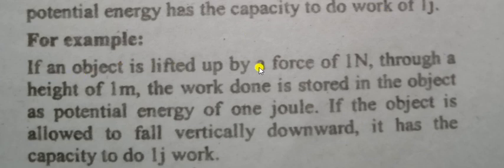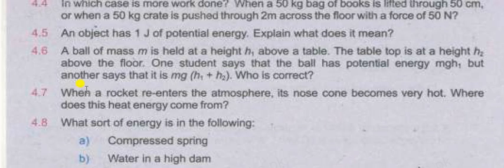For example, if an object is lifted by a force of one newton through height of one meter, the potential energy will be one joule because W equals mgh, and mg is one while h is also one. If the object is allowed to fall vertically downward, it has the capacity to do one joule work.